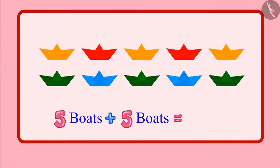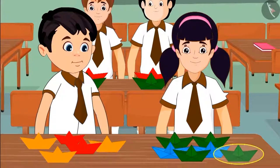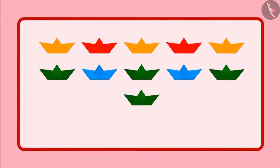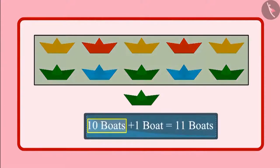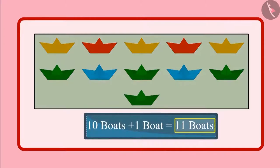Chotu and Aarti have together made 10 boards. Aarti had another paper left and she made another board with it. So can you tell me how many boards do Chotu and Aarti have now? 10 boards along with another board — so there are a total of 11 boards.